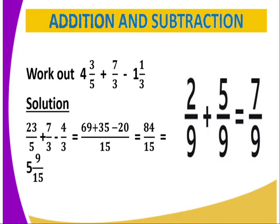Let us start with the first one, which is addition and subtraction. You are required to work out 4 and 3 fifths plus 7 over 3 minus 1 and a third. For the solution, what you should do, you convert the 4 and 3 fifths into an improper fraction by getting 5, you multiply by 4, and you add 3. So 4 times 5 is 20, plus 3, you get 23 over 5.